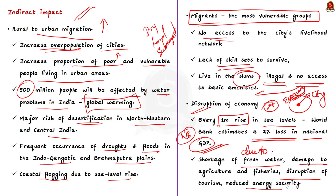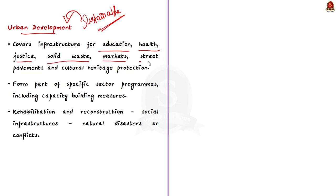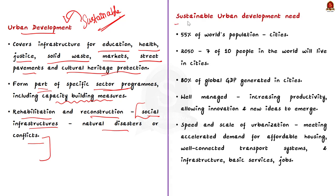To avoid such catastrophic consequences of climate change, we need sustainable urban development. Urban development generally covers infrastructure for education, health, justice, solid waste, markets, street pavements and cultural heritage protection. These constructions usually form part of specific sector programs including capacity-building measures. Special attention is also paid to slums of large cities. The rehabilitation and reconstruction comprises in particular social infrastructures following natural disasters or conflicts. Now let us see why sustainable and resilient urban development is needed.